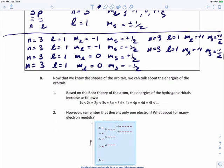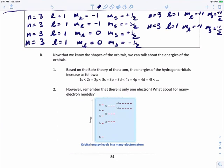So now that we know the shapes of the orbitals, we can actually start talking about the energies of these orbitals. And according to the Bohr theory, the energies of the hydrogen orbitals went like this: we start with the 1S, which is lowest in energy. Then you have the 2S and 2P, which were equal in energy. Then you have the 3S, 3P, and 3D, which were equal in energy. And then you have the 4S, 4P, 4D, and 4F, which were all equal in energy. But that only works for one electron. That only works if you only have one electron.